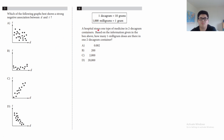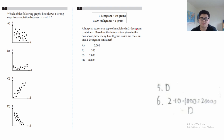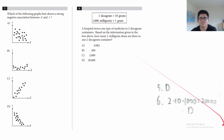Question 6: a hospital stores medicine in two-decagram containers. How many one-milligram doses are in one two-decagram container? One decagram equals 10 grams, and one gram equals 1000 milligrams. So 2 decagrams × 10 grams/decagram × 1000 mg/gram = 20,000 milligrams, which means 20,000 one-milligram doses. The answer is D.